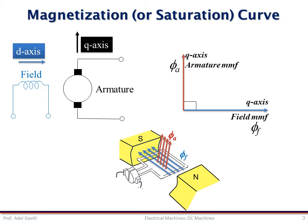The component of the field flux on the quadrature axis is zero and the component of the armature flux on the direct axis is also zero. This may not be the case for practical DC machines and there will be interaction between the two fields that is called armature reaction. However, we will just consider only the ideal case in which the armature reaction is negligible.